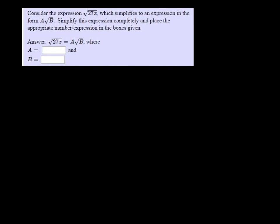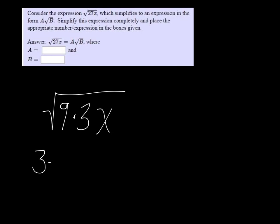So square root of 27 we can break down as the square root of 9 times 3, because 9 is a perfect square and I can pull that out. Square root of 9 is 3, and what's left is 3x in the box. So in the answer boxes, a is 3 and b is 3x.